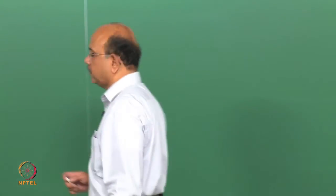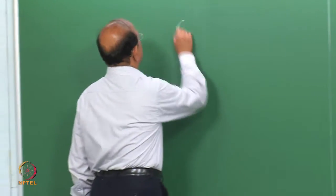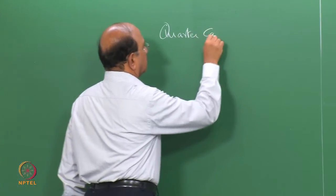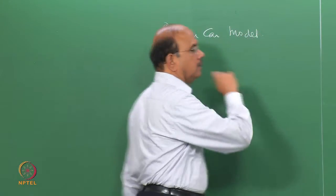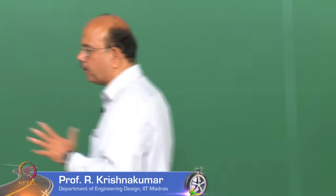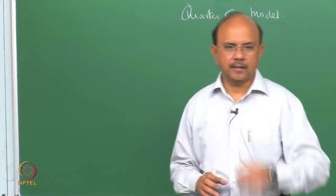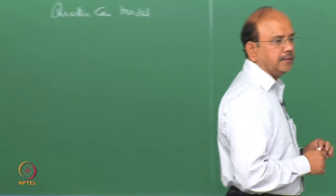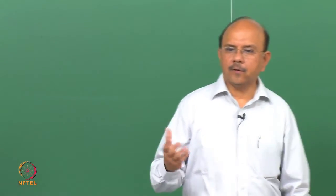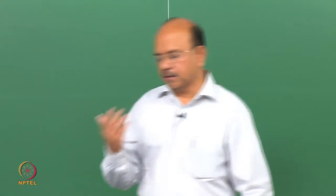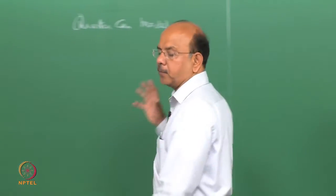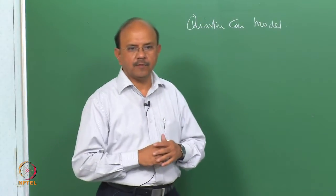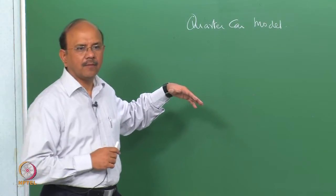In the last few classes, we had looked at the quarter curve model. Remember that we reduced this from a half-car model — we said we would be cutting it into front and rear. We distributed the mass of the whole vehicle into two parts: front and rear. The two masses we considered were the unsprung and the sprung mass. With these, we were able to get certain equations which included the two natural frequencies.